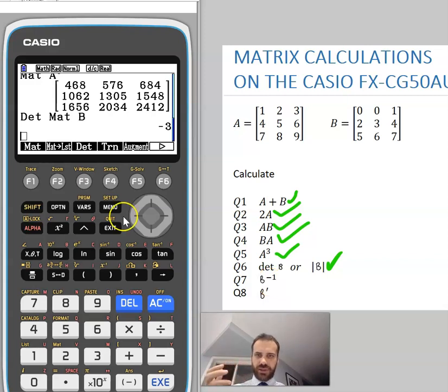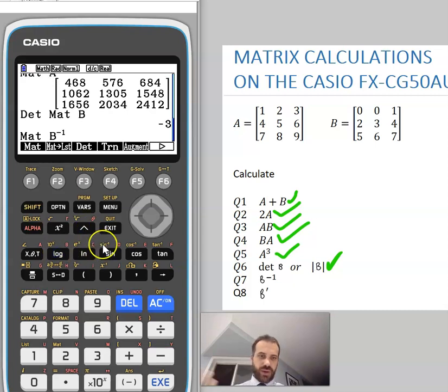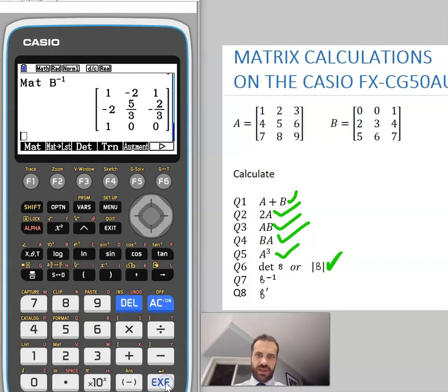Now the inverse... you might go looking for an inverse button, but there's not actually an inverse button there. We're going to do it really simply. It's just going to be matrix B, and then it's to the power of negative 1. That's our inverse symbol. And that should give us the inverse of matrix B, something we're not capable of doing algebraically. It's just too much work.